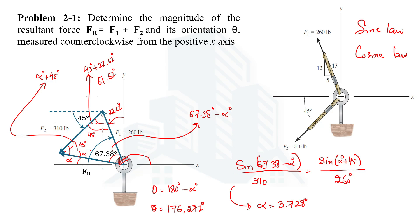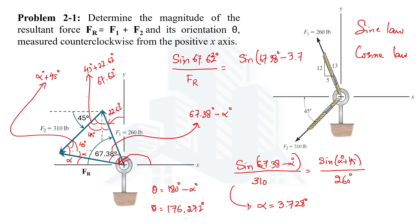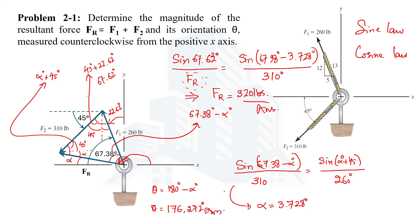For the resultant force magnitude, we again use the sine law. The opposite angle to the resultant is 67.62 degrees, so: sin(67.62) / Fr = sin(67.38 − 3.728) / 310. Solving this equation, where Fr is the only variable, we get the resultant force as 320 pounds.